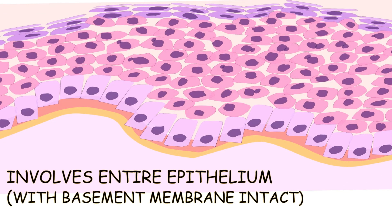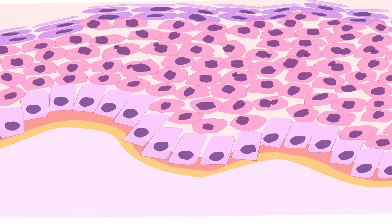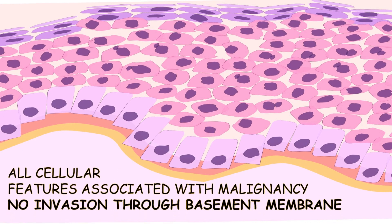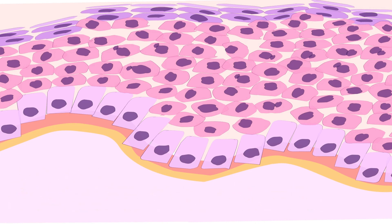In carcinoma in situ, there is involvement of the entire epithelium with the basement membrane still intact. It exhibits all the cellular features associated with malignancy, but there is no invasion through the basement membrane, as there is still no breach in the basement membrane.